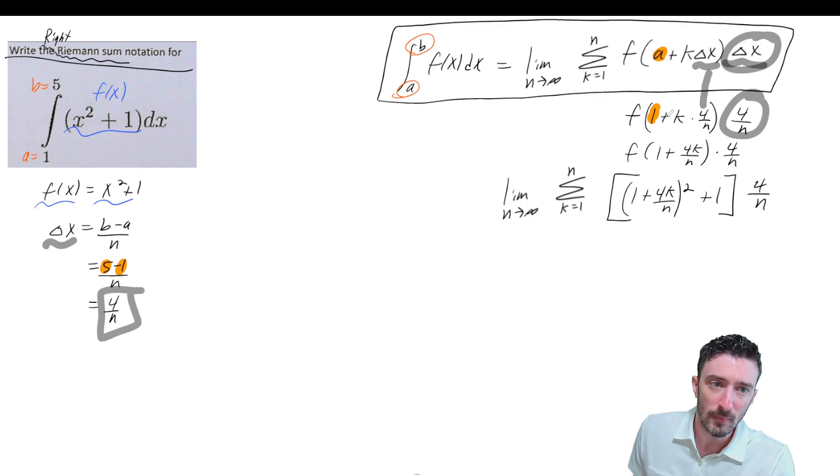I can clean this up a little bit. I can make it 1 + k × (4/n) or 1 + 4k/n. But I got to remember that it's really supposed to be f of whatever.